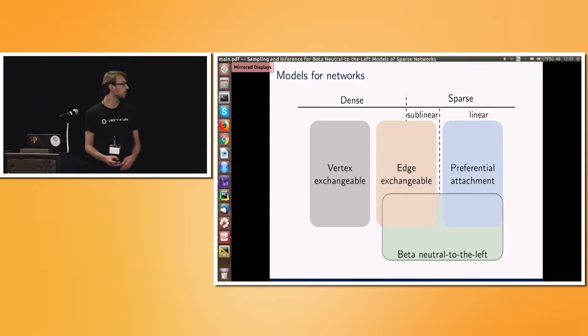I'll start with a broad overview. In modeling networks, we have these vertex and edge exchangeable models in gray and orange, and they're very powerful. They have tractable inference schemes, but there's some behaviors that they just don't capture. That's this linear sparsity on the far right.